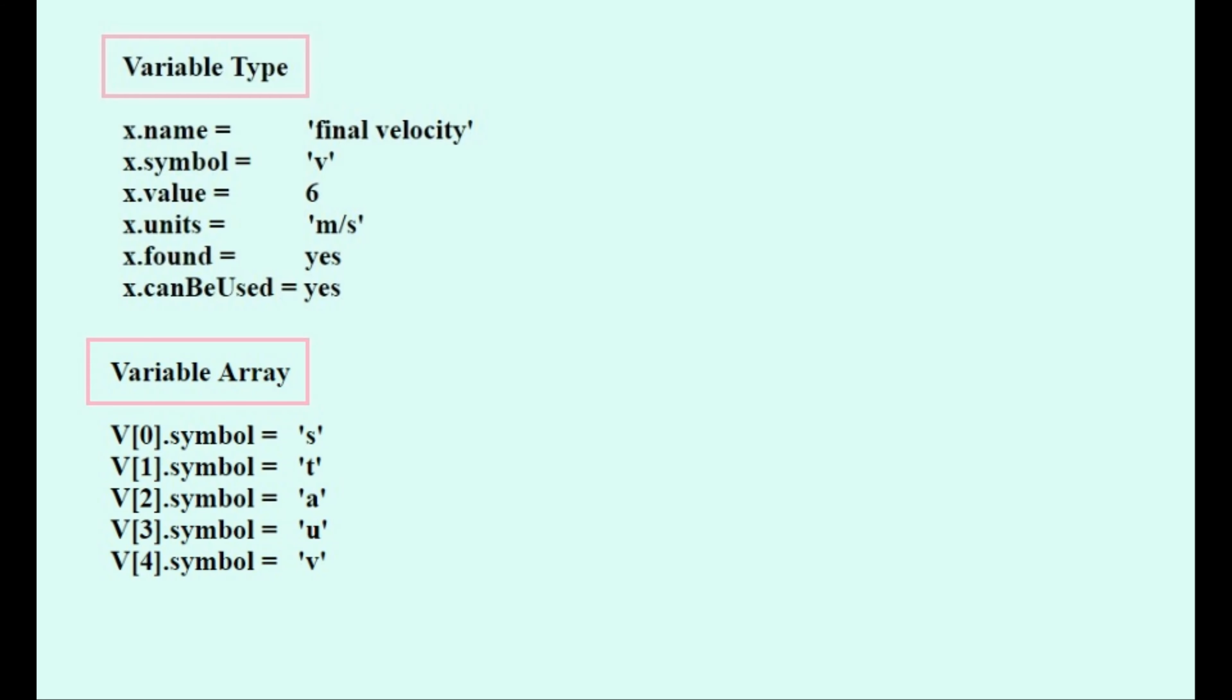Then we'd create an array of them. We'd need 5 corresponding to the 5 variables in our list, and here are the symbols for each. I think I can trust you to fill out the rest.